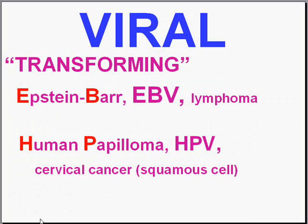Let's talk about our fourth and last general clinical group of viral infections. We talked about the acute transient, the chronic latent, and the general chronic. Now let's give examples of the two most common oncogenic viruses: EBV — Epstein-Barr virus — and HPV, human papillomaviruses. Both can cause acute infections of various types, but they are also implicated in the development of many human malignancies.